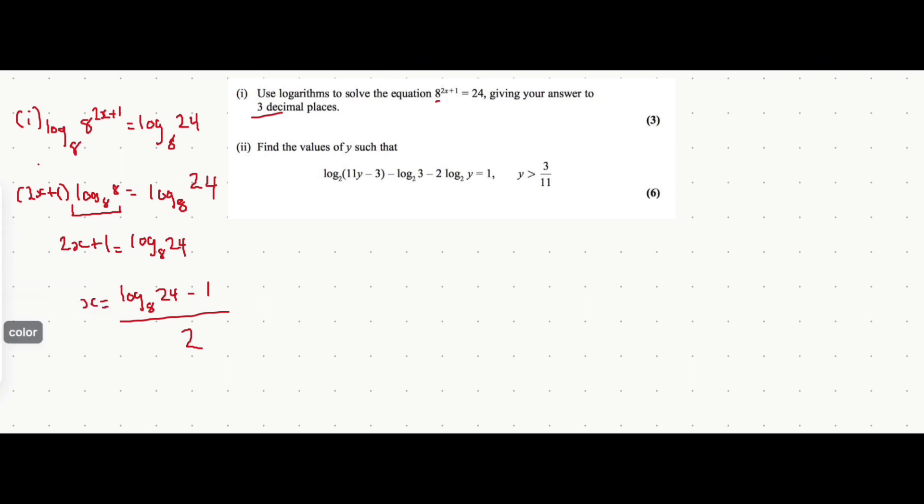And yeah, let's move into part 2 of the question, which is a bit more difficult in my opinion. Here we're going to use a rule that when you subtract logarithms and the base is the same, then you divide the insides of the logarithms. So using that idea on these first two terms, we get that the first two terms can be simplified into log base 2 of 11y minus 3, all divided by 3. So let's try that out.